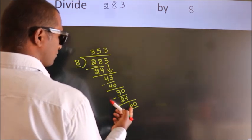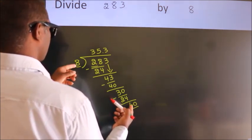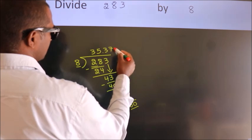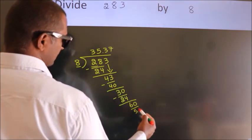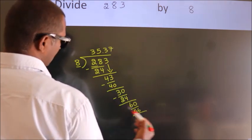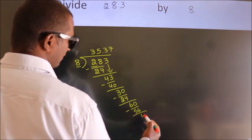A number close to 60 in 8 table is 8 sevens, 56. Now we subtract. We get 4.